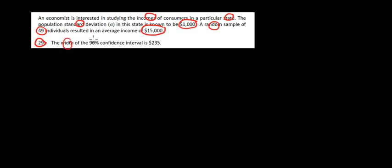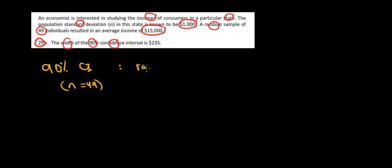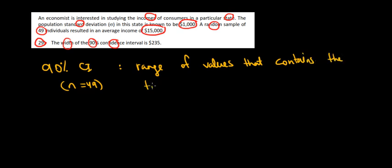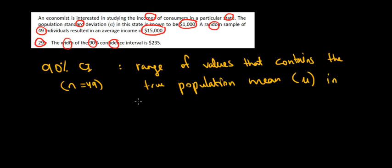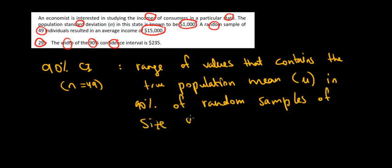We want to find out the width of the 90% confidence interval. But first, what does it mean to have a 90% confidence interval with a sample size of 49 observations? A 90% confidence interval gives us a range of values that contains the true population mean — denoted mu — in 90% of random samples of size 49.